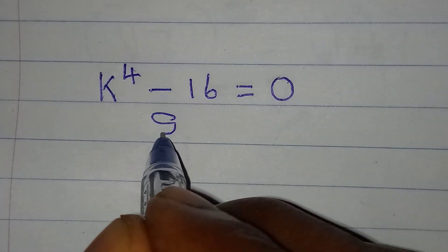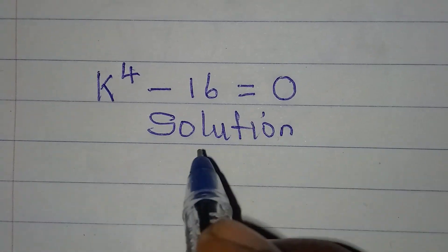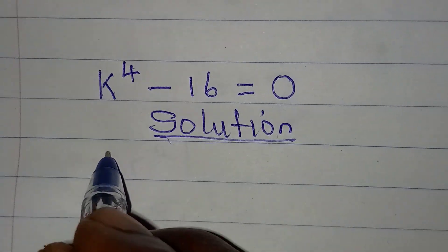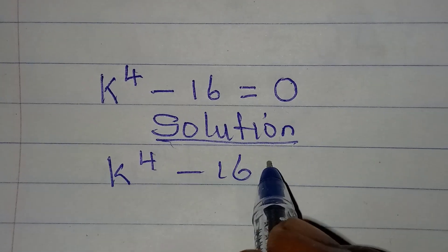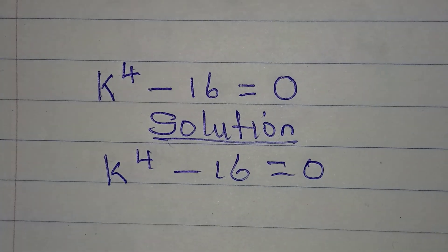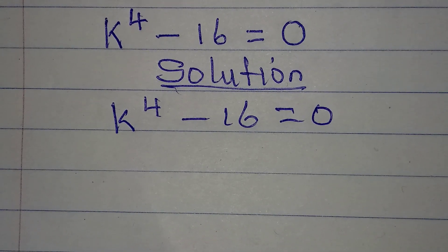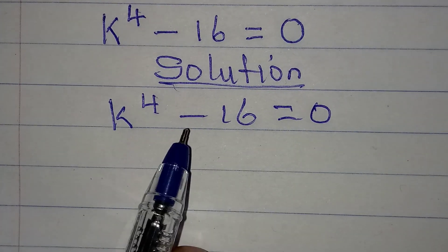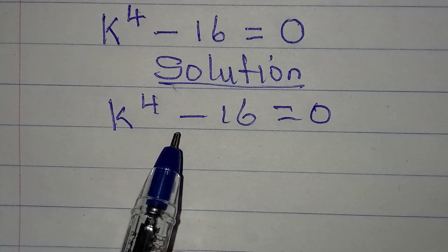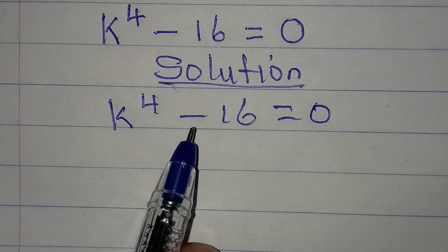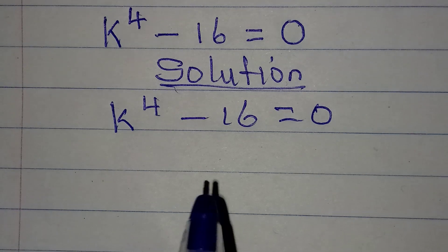Hello everyone, let's solve this problem right away. We have k to the power of 4 minus 16 equal to zero. We need to solve this completely — you can guess what the answer would be, but since we are solving this completely, we should have four different solutions.